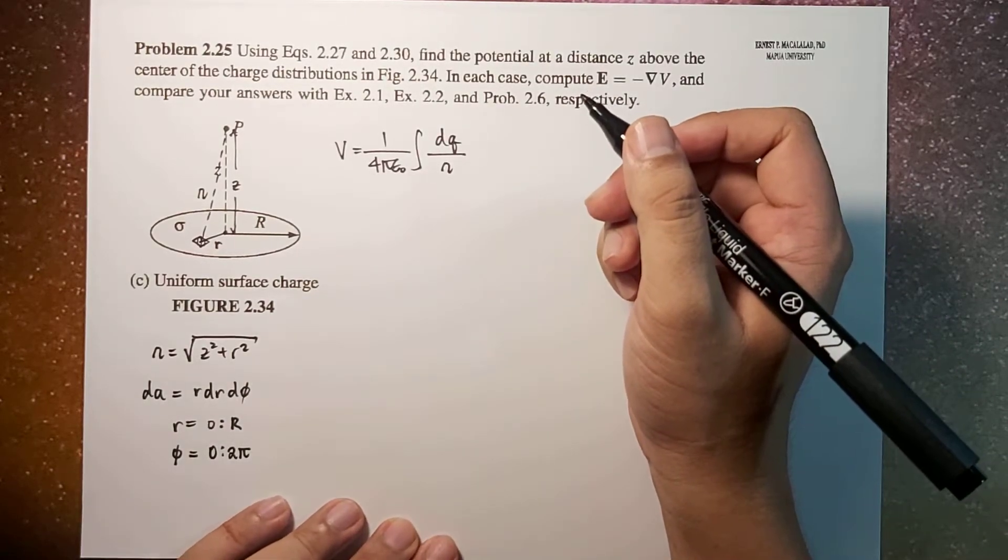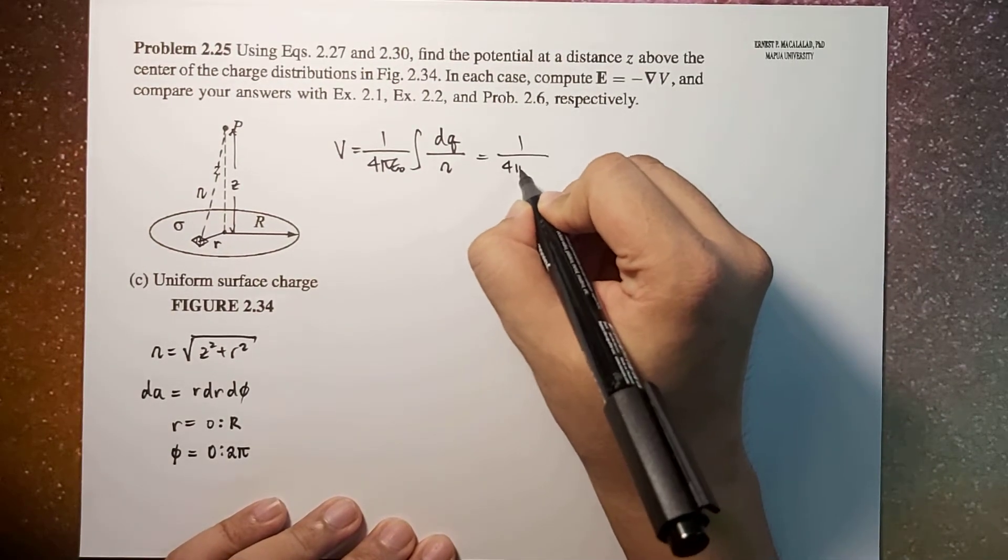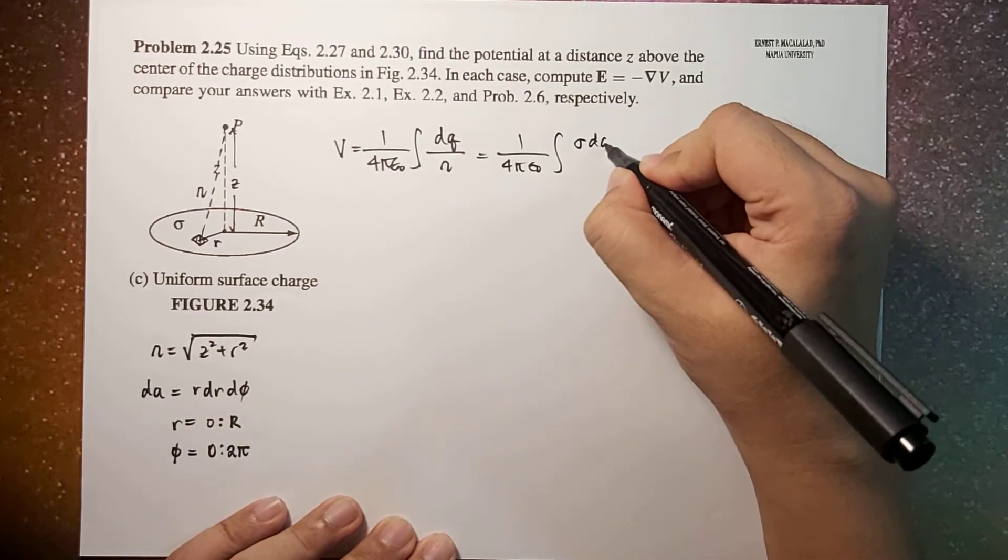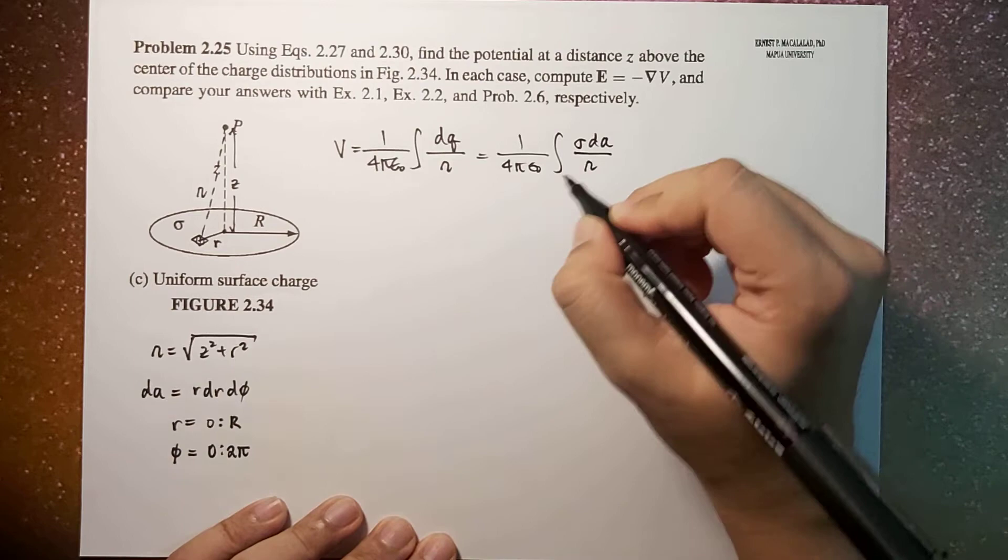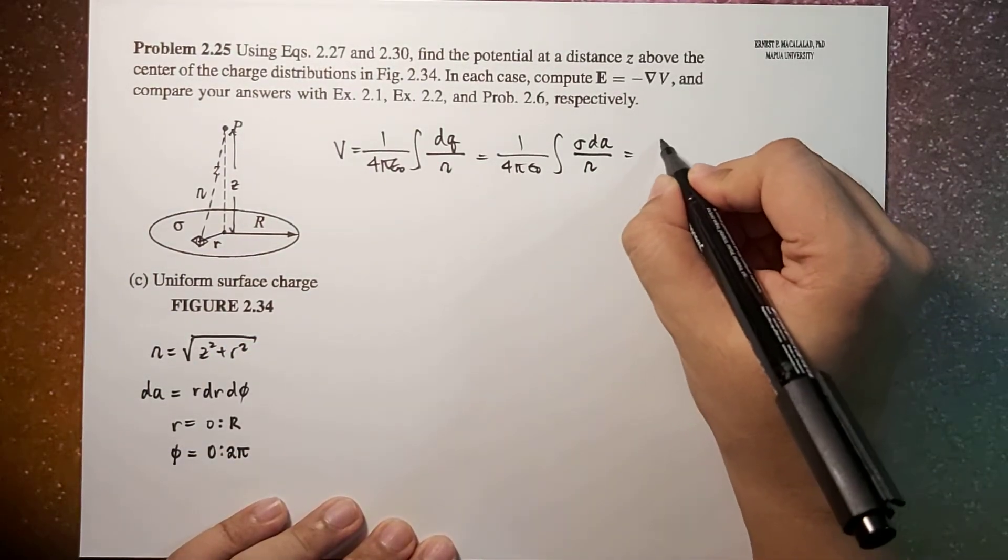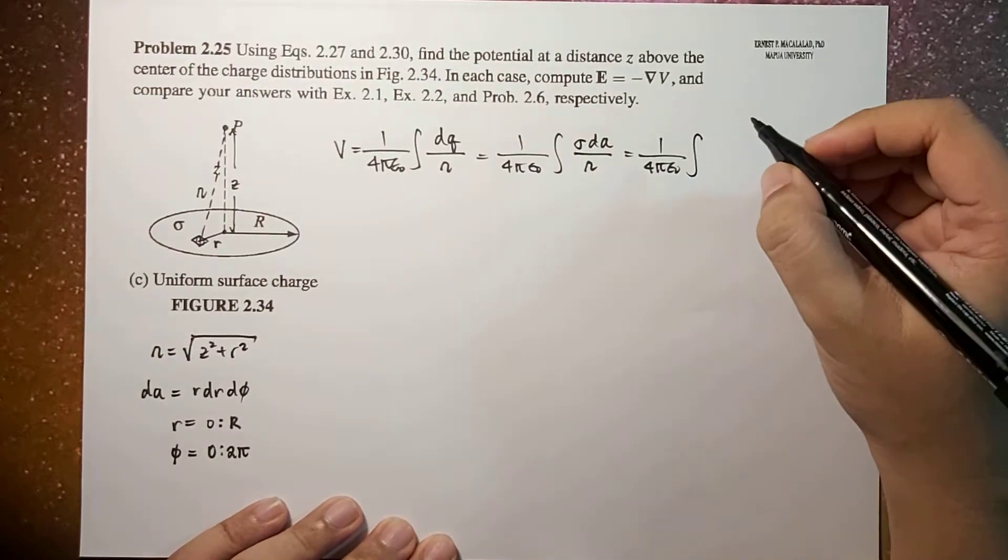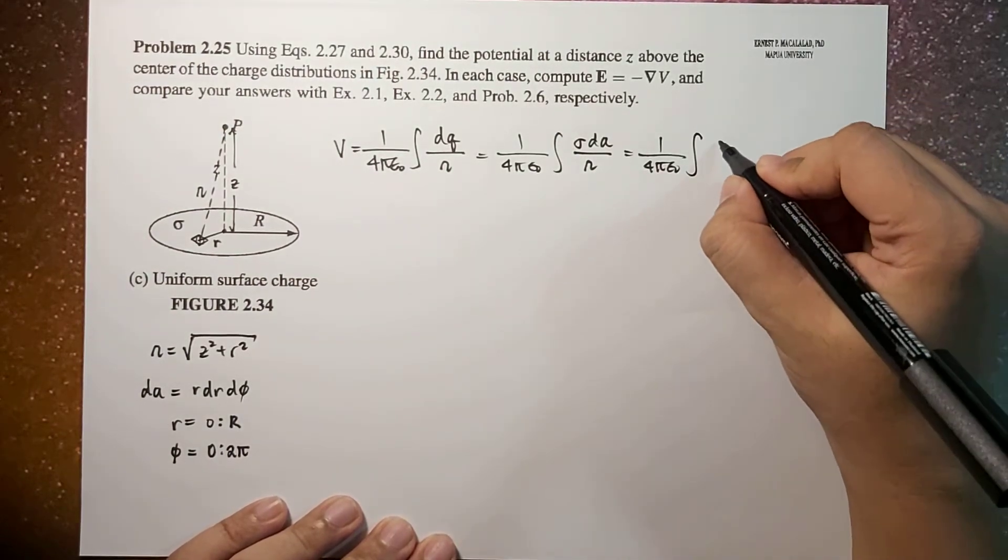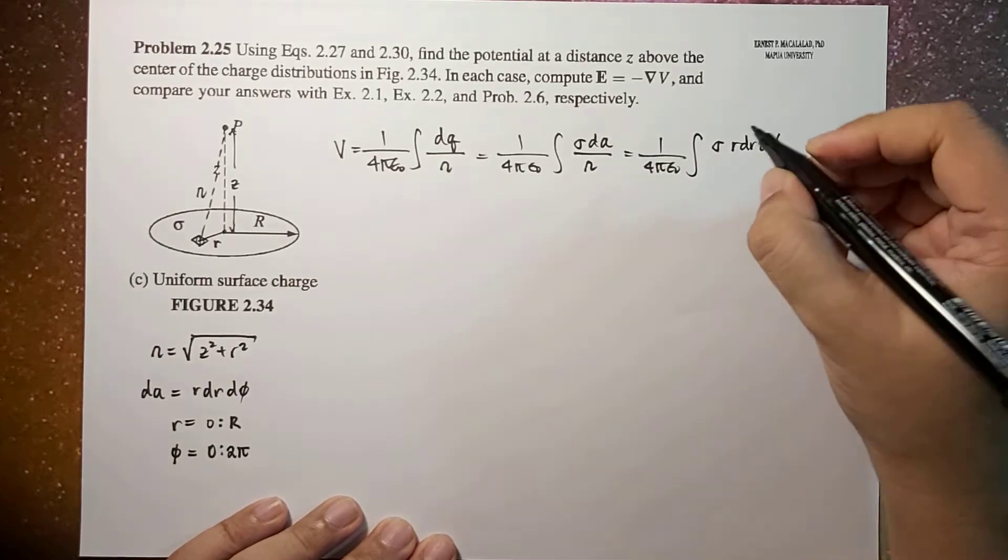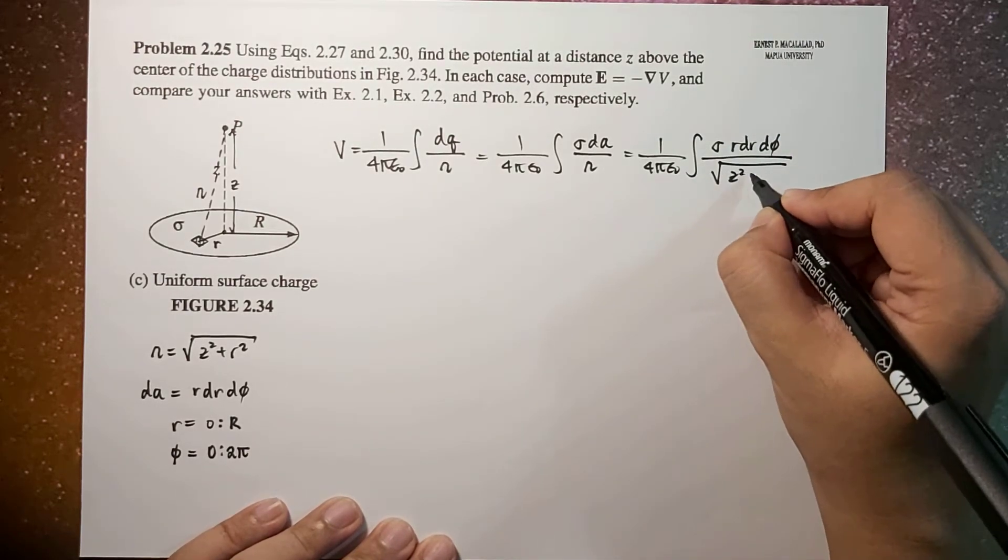This will now be equal to 1 over 4π epsilon 0 times sigma dA over script r. Putting everything together, this will be 1 over 4π epsilon 0 times integral of sigma r dr dφ over square root of z squared plus r squared.